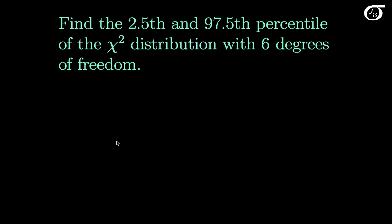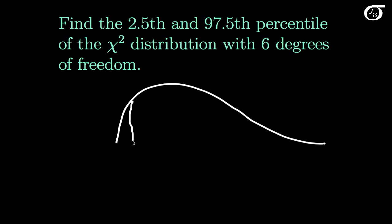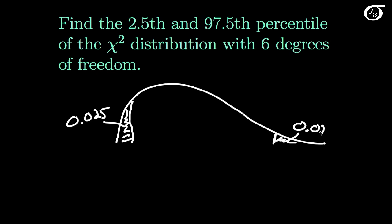Our chi-square distribution with 6 degrees of freedom is going to look something along those lines. The 2½ percentile is the value that yields an area to the left of 0.025, and the 97½ percentile is the value that yields an area to the left of 0.975, and an area to the right of 0.025.